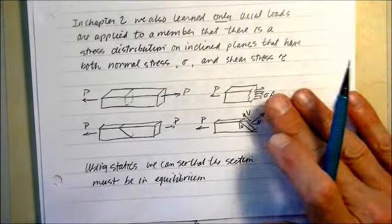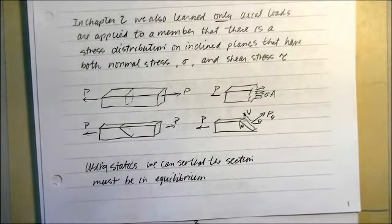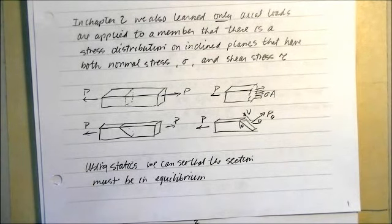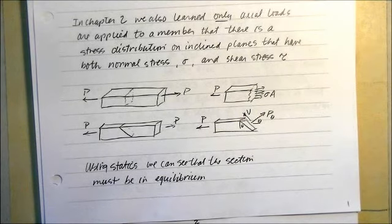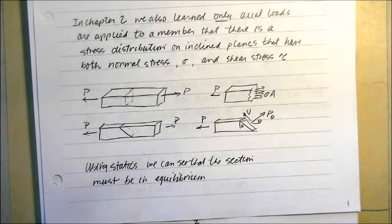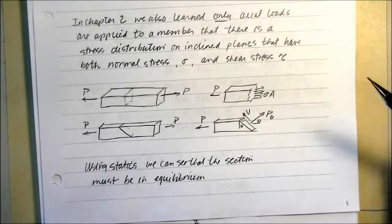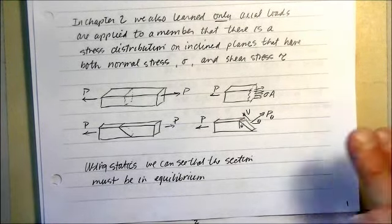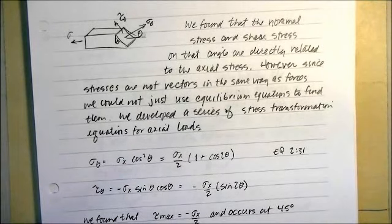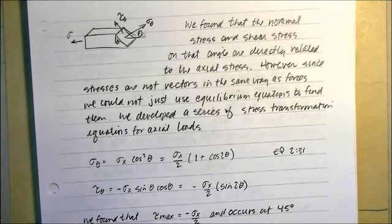In chapter 2 we also learned that when only axial loads are applied, there is a stress distribution on inclined planes. So even though the member is only loaded axially — only pulling in one direction — there are shear stresses that develop on an inclined plane. We drew a little force distribution and using statics found out what P-theta and V-theta are, and then found the normal stress and shear stress on that angle, which are directly related to the axial stresses.